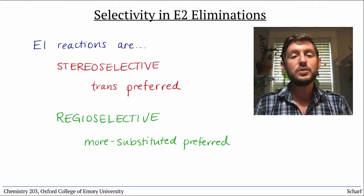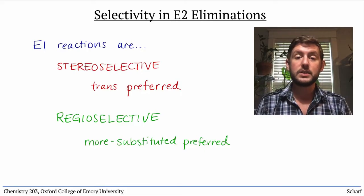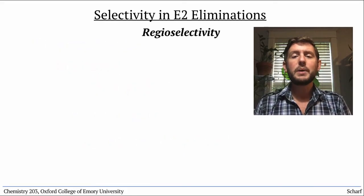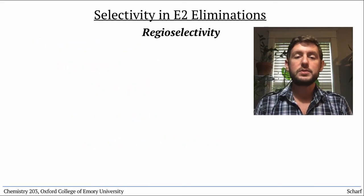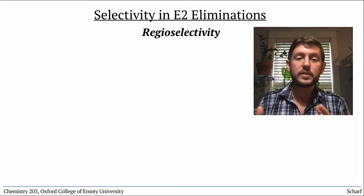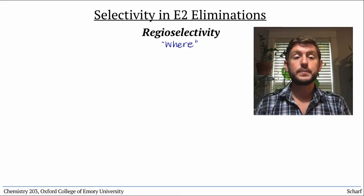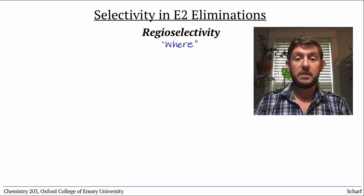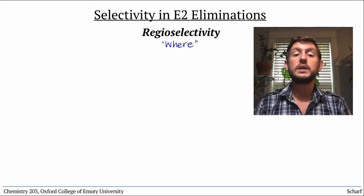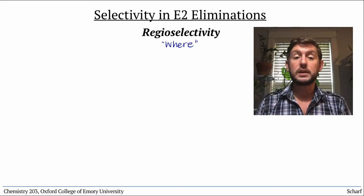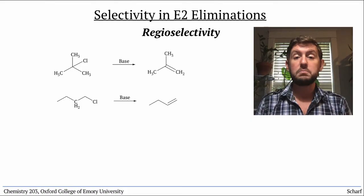But with E2 eliminations, there are a few additional things to consider. Let's first think about regiochemistry — that is, where the double bond is formed, or which constitutional isomer is formed. For many substrates, there's no need to worry about this. Every proton on the adjacent carbons would give the same product — t-butyl chloride or n-butyl chloride, for instance.